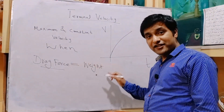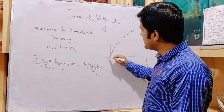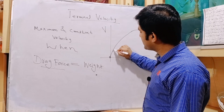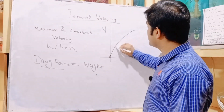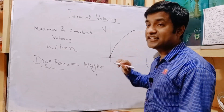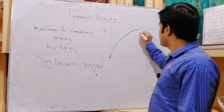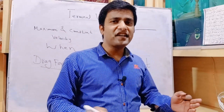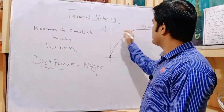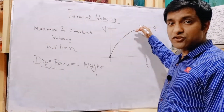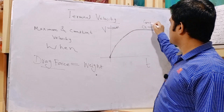When drag force becomes equal to the weight of the object, he will attain a constant velocity. As he jumps out of the plane he has a large acceleration and a sudden increase in velocity, but as he moves in the air due to air resistance, his acceleration starts decreasing. At some point his velocity becomes uniform, acceleration becomes zero, and that maximum velocity is called terminal velocity — it is constant and maximum.